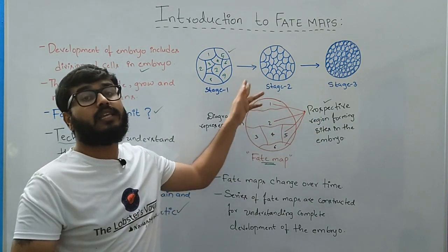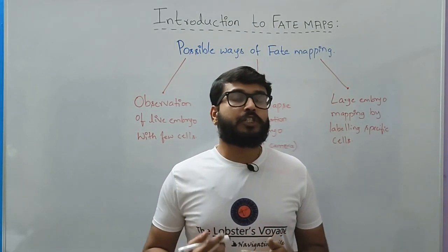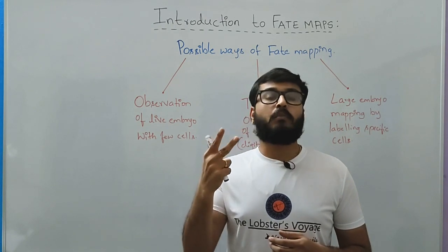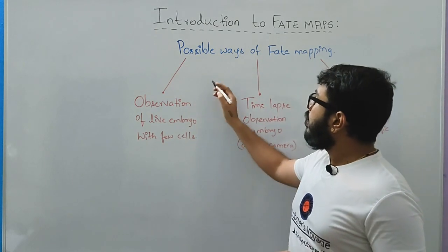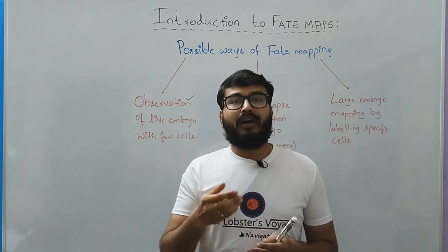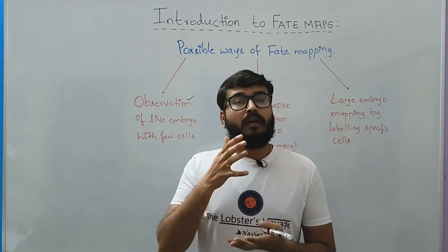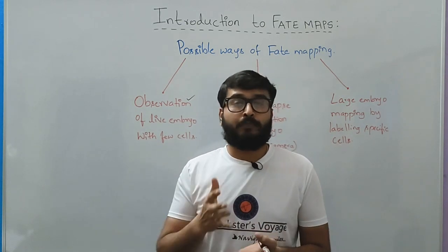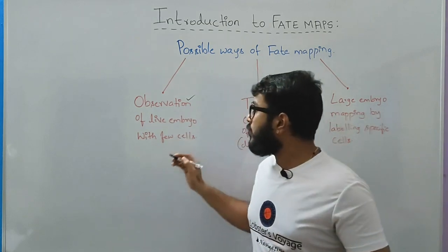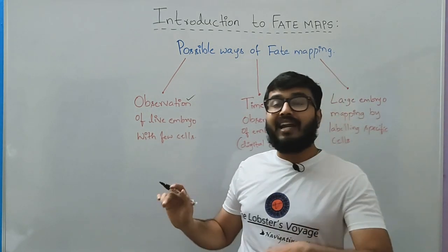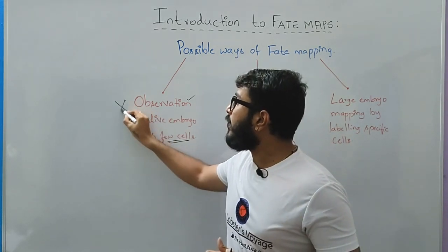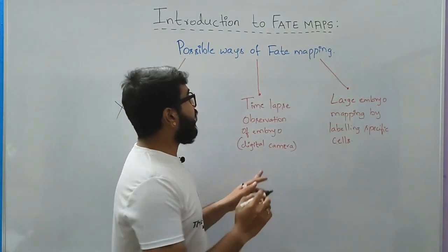The possible ways of fate map construction include three basic mechanisms: first, physical observation; second, use of technology or a camera; and third, most importantly, use of color or dye. Physical observation of a live embryo is done by an individual who isolates the embryo and places it under a microscope, constantly observing the developmental patterns. The embryo may divide into two, four, or six cells, and one must manually count and make note — which is very difficult. This technique becomes very difficult once the number of cells exceeds a countable mark.